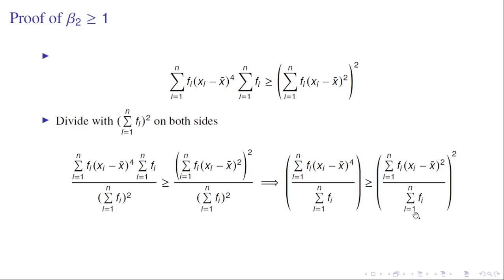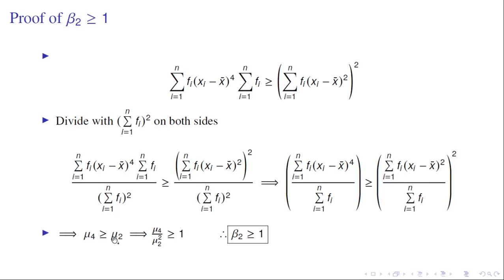This gives μ4 · Σfi ≥ [Σfi(xi−x̄)²]², which means μ4 ≥ μ2². Dividing both sides by μ2² gives μ4/μ2² ≥ 1, which is nothing but β2 ≥ 1. Hence the second inequality is proved.